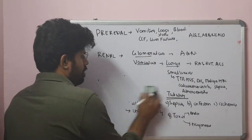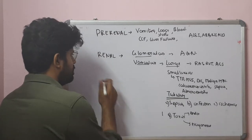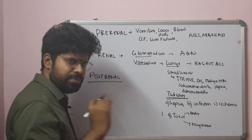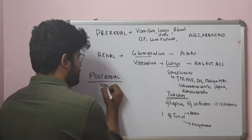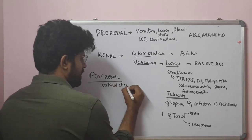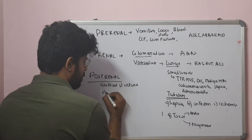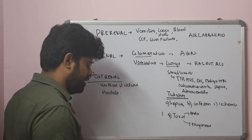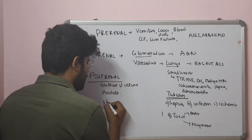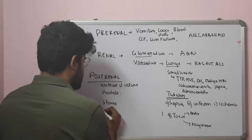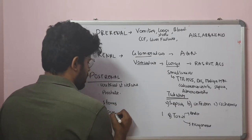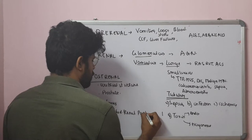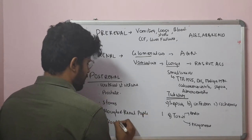Post-renal causes are predominantly urological — obstruction. Obstruction can be due to urethral strictures, prostate disease in men (benign prostatic hypertrophy or prostatic carcinoma), obstructed urinary catheter, renal stones, ureteric stones, bladder stones, sloughed renal papillae secondary to analgesic nephropathy, or blood clots causing ureteric obstruction.